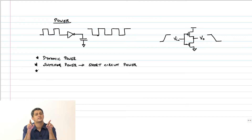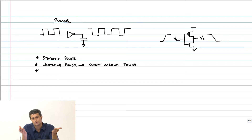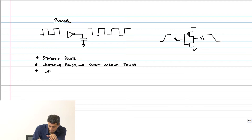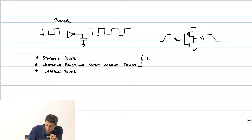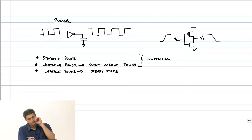The third is steady-state power, which ideally was supposed to be zero because there was no leakage. But of course, we do now have a reasonable amount of leakage, and therefore we have leakage power as well. Both dynamic and short circuit power happen only during switching, but leakage power occurs in steady state.